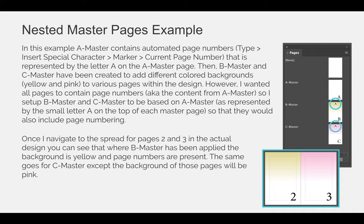The automatic page numbering is represented by the letter A on A Master. Looking at B Master and C Master, they have been created to add different colored backgrounds — Master B has the yellow background and Master C has the pink background for various pages within the design. However, since all pages should contain page numbers, I set up Master B and Master C to be based on Master A, as represented by the small letter A on the top of each Master Page, so that they would also include the page numbering.